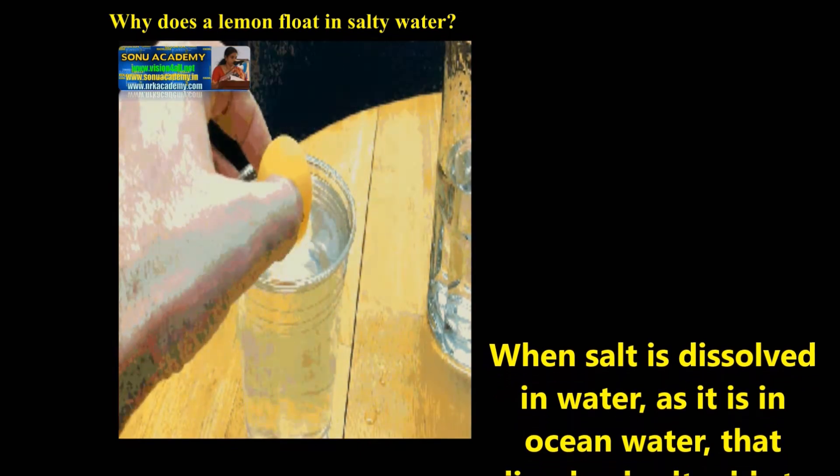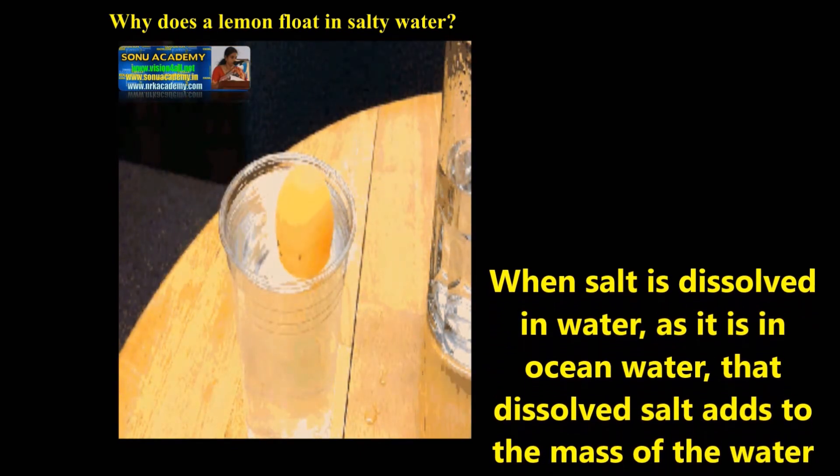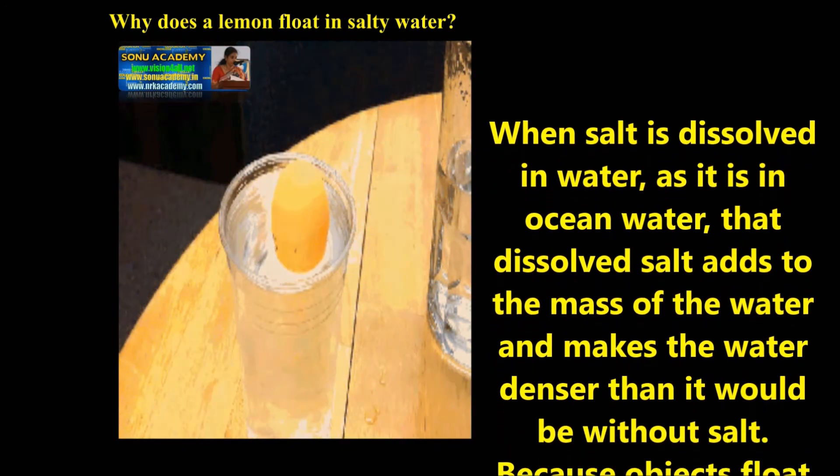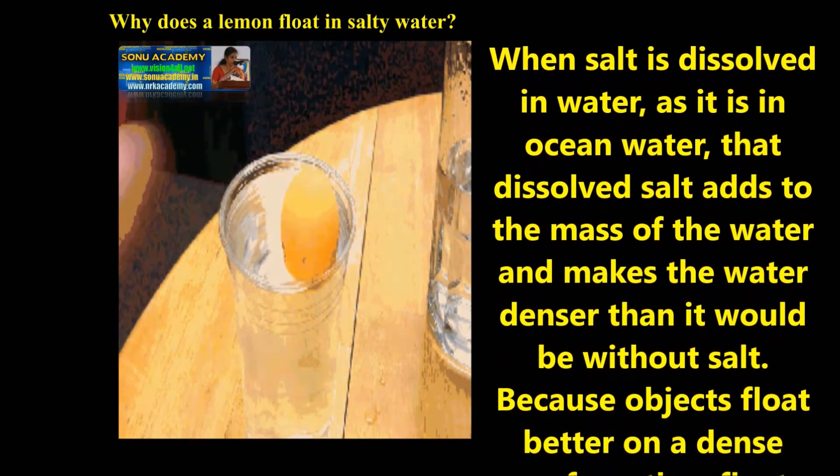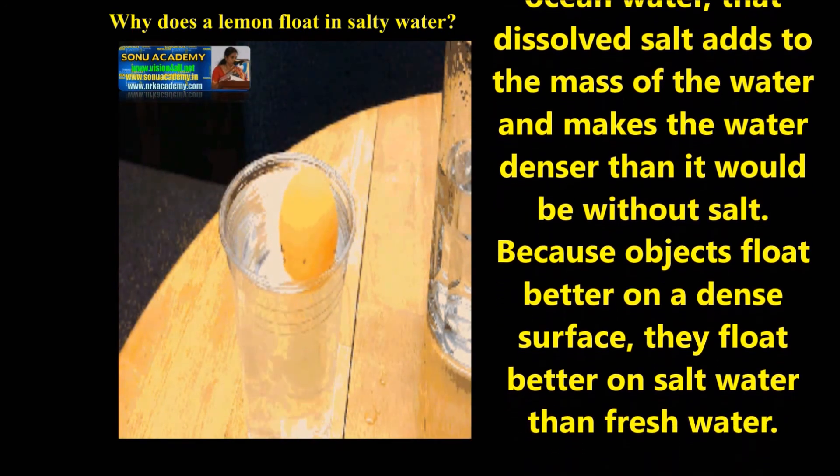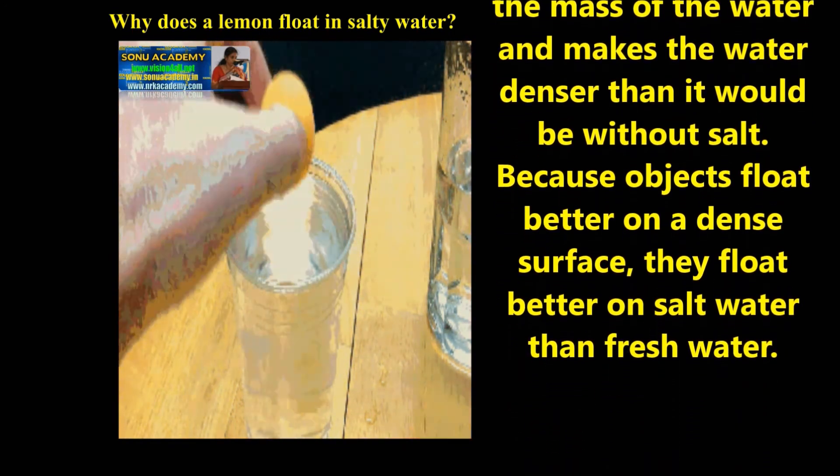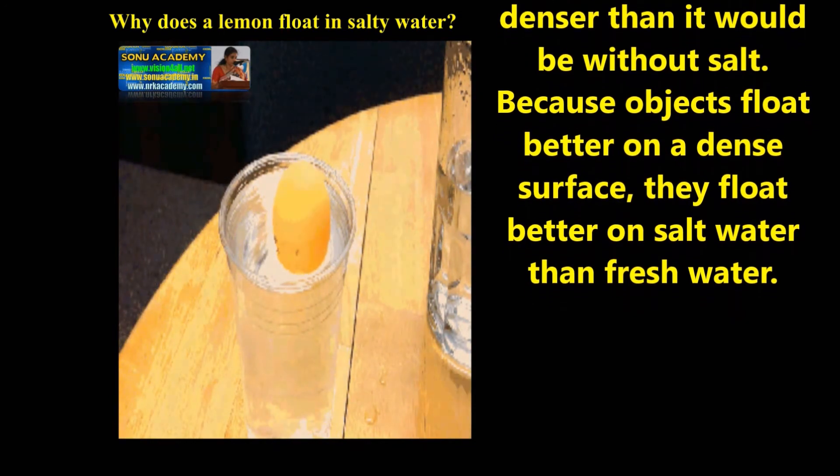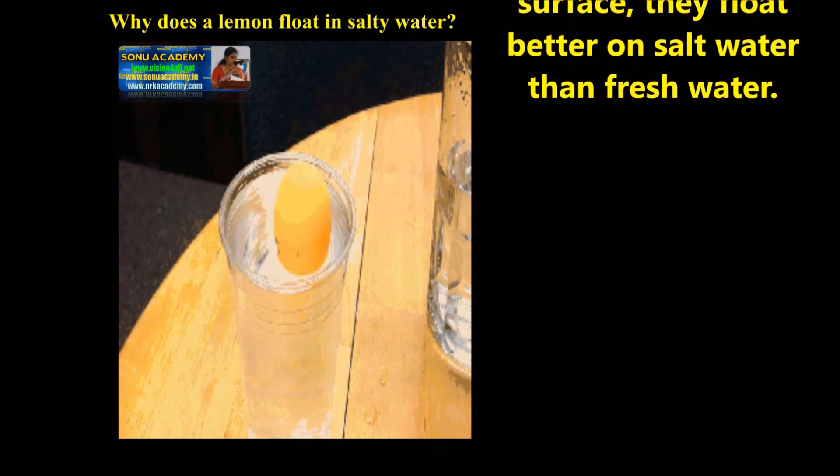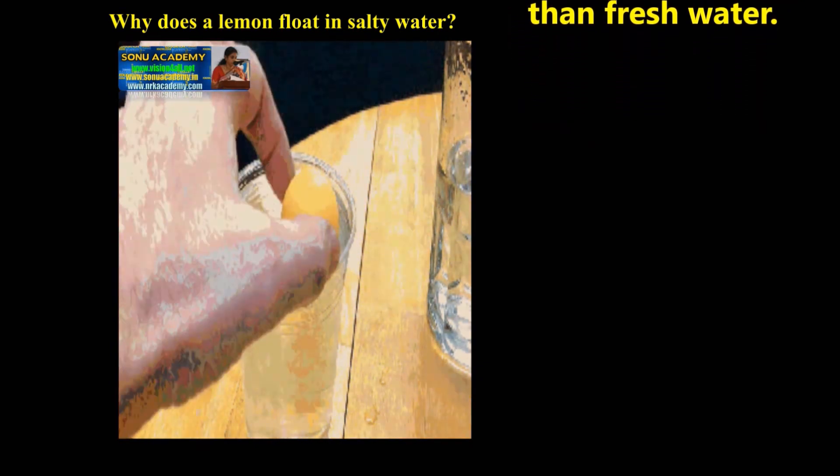Let us discuss why a lemon floats in salty water. When salt is dissolved in water, as it is in ocean water, the dissolved salt adds to the mass of the water and makes the water denser than it would be without salt. Because objects float better on a dense surface, they float better on salt water than fresh water.